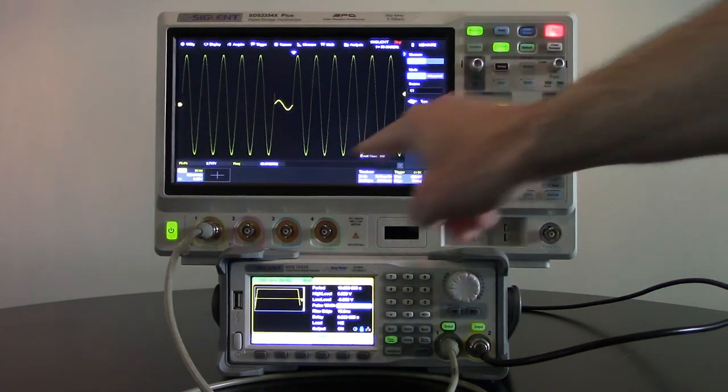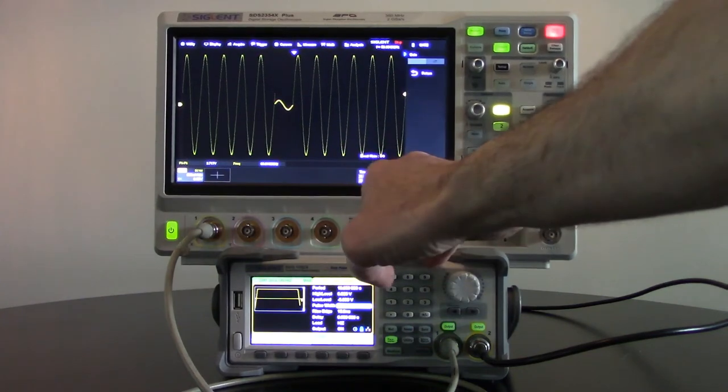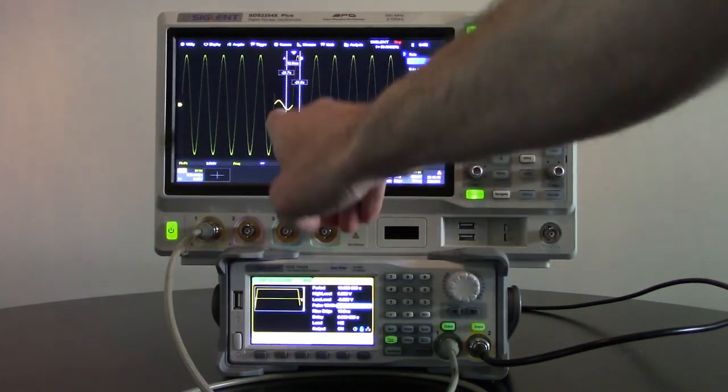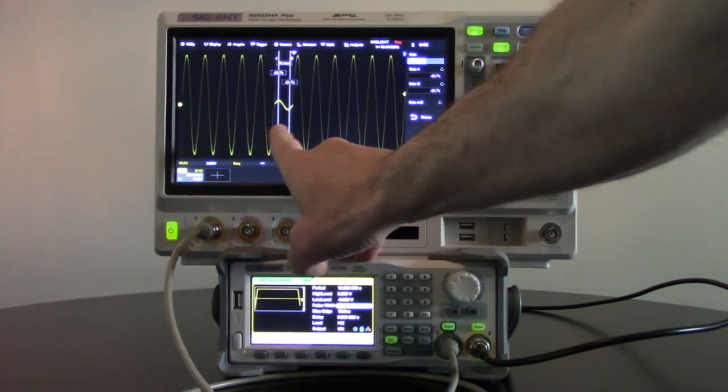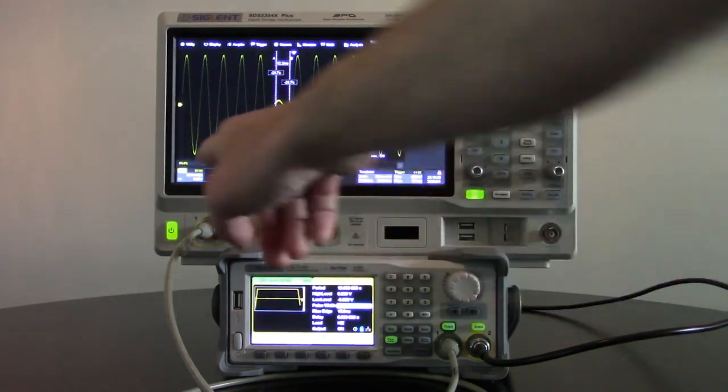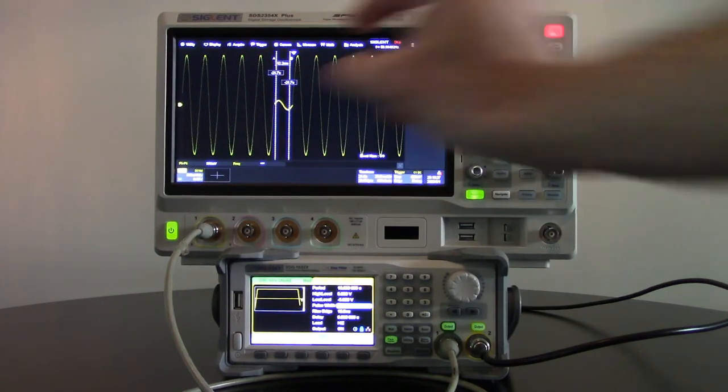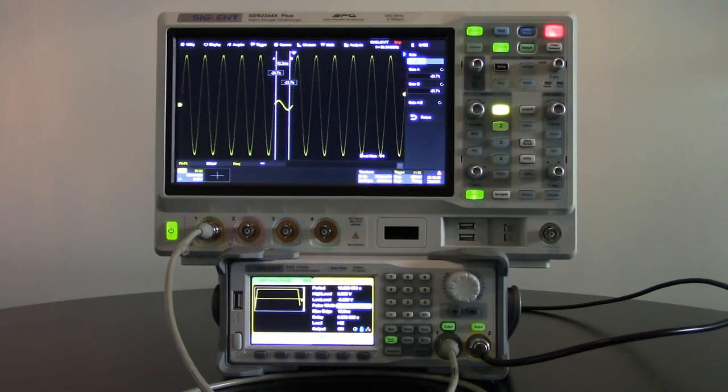I can also turn on measurements. And with measurements, we have the ability to turn on a gate. Now I can turn on a particular gated measurement and I can move that gated measurement and just look at the voltage values in that particular area. So you can see 360 millivolts. So I have a fairly significant drop in that particular measurement or in that particular amplitude for a really short period of time.